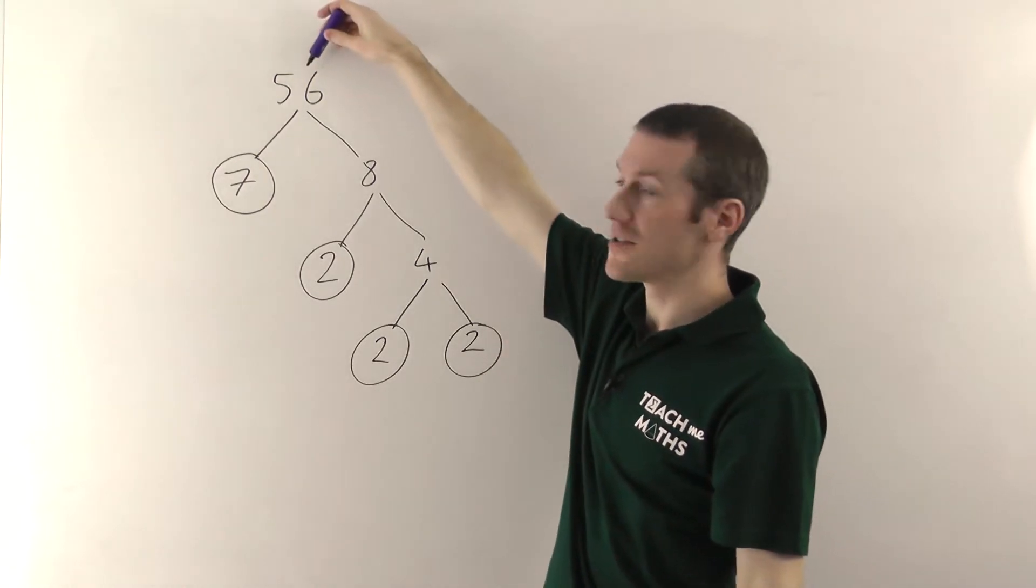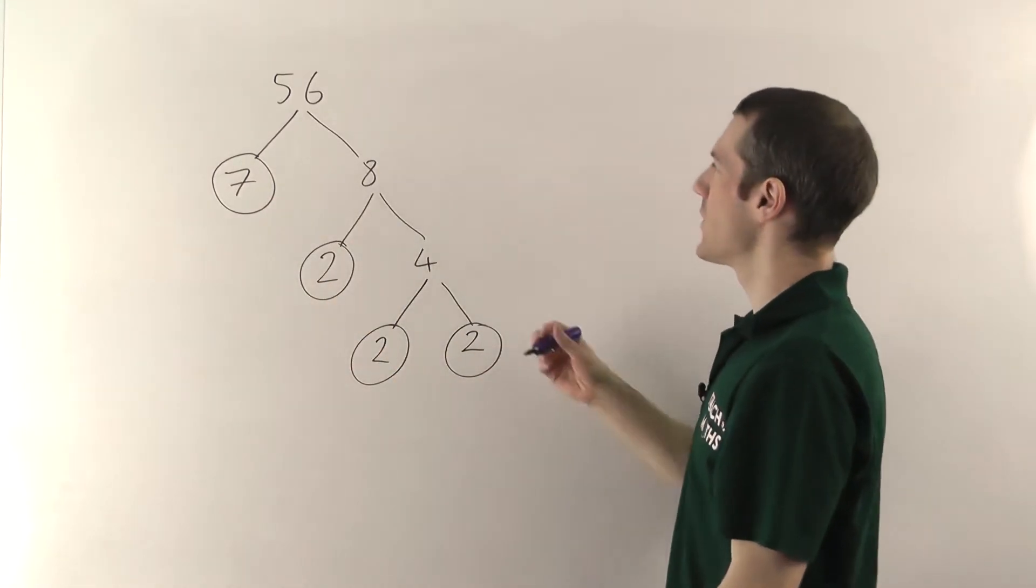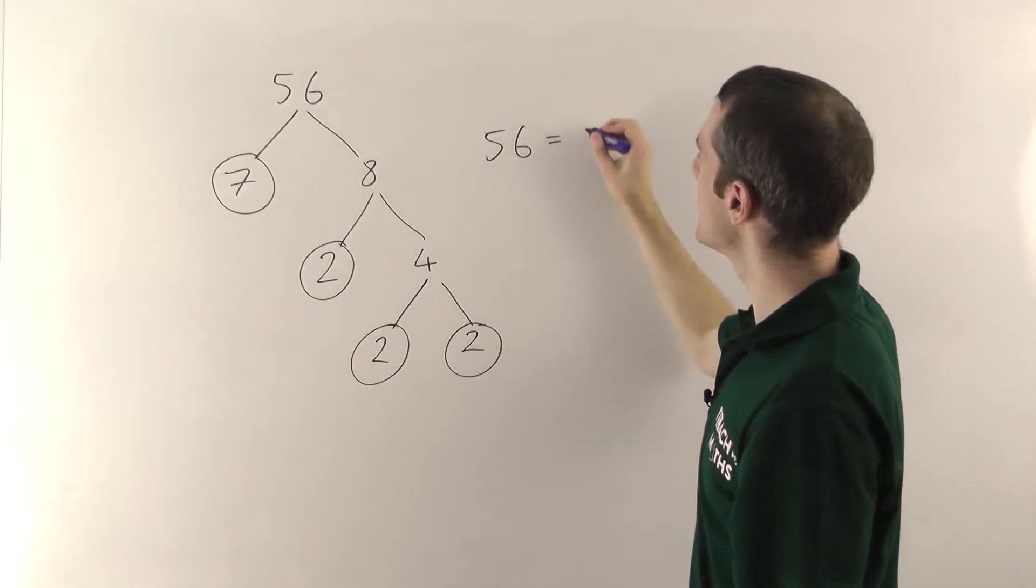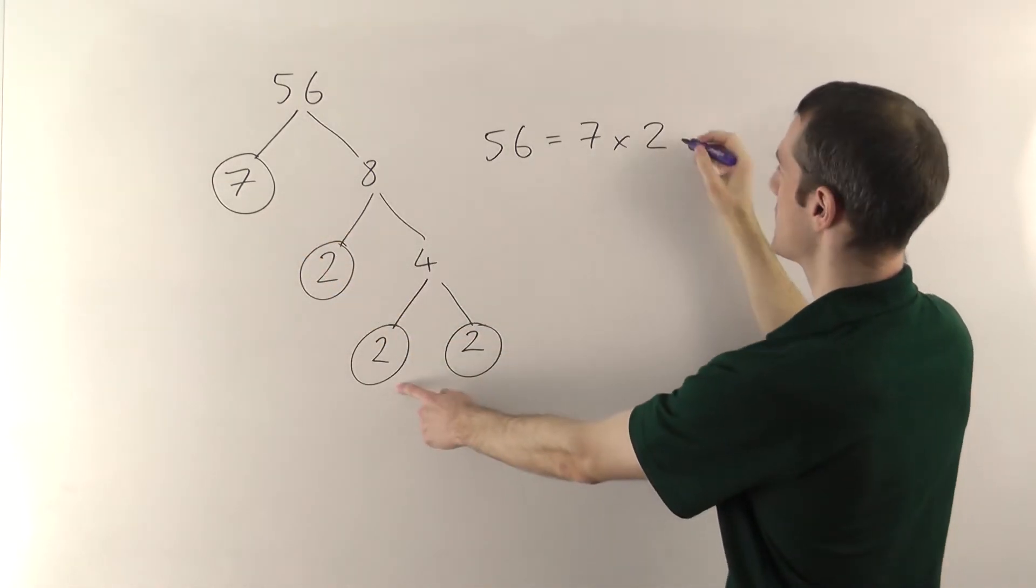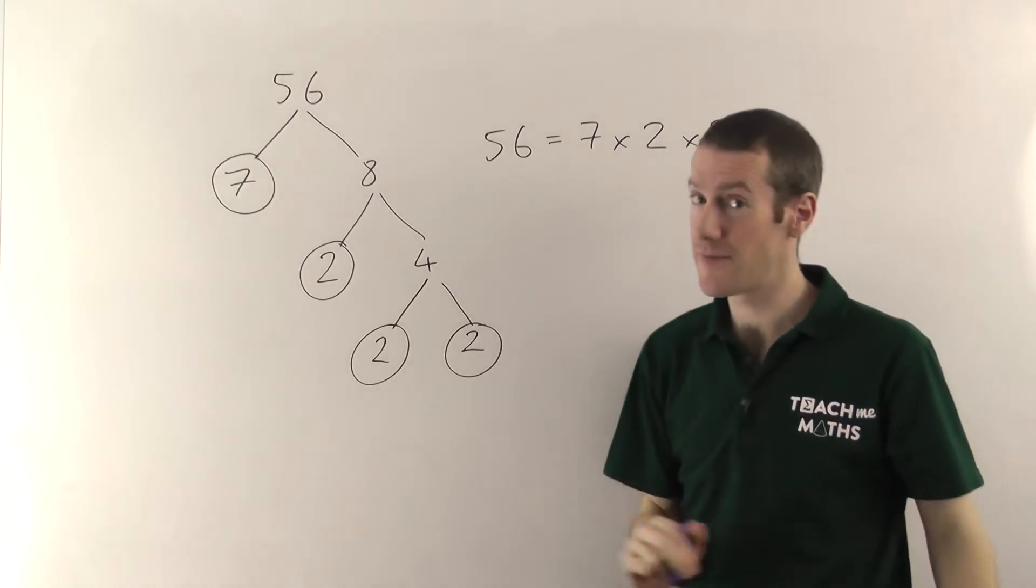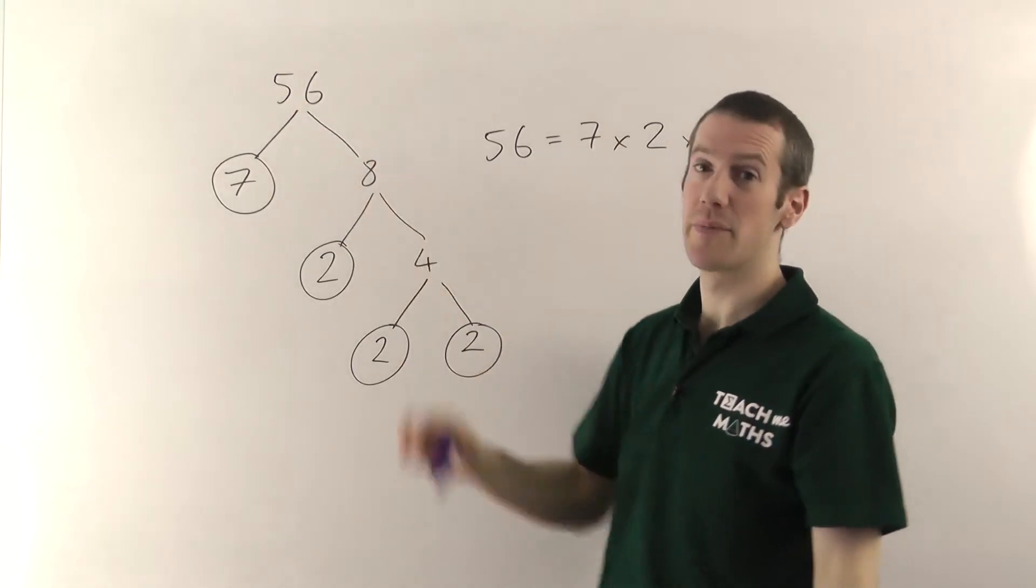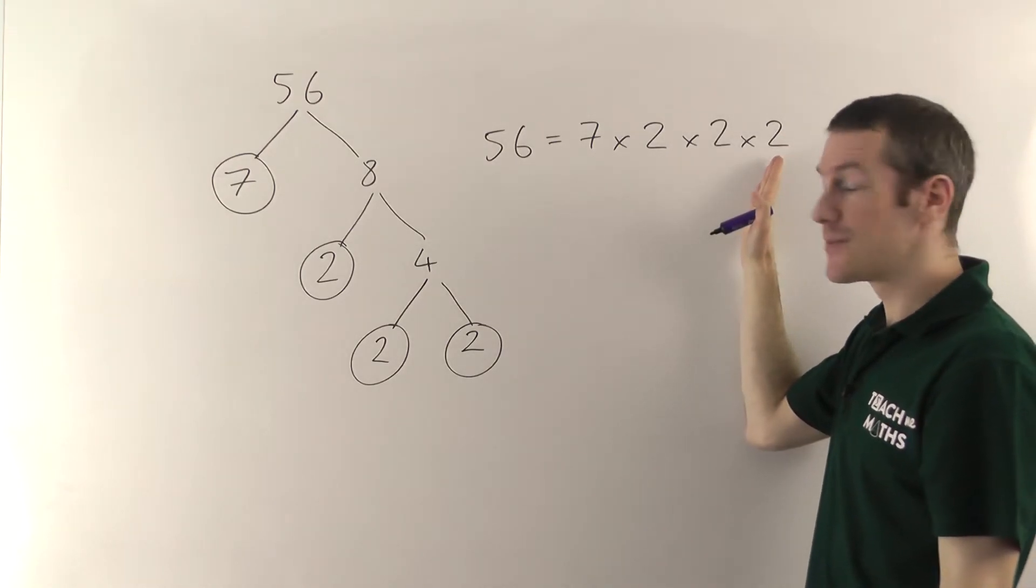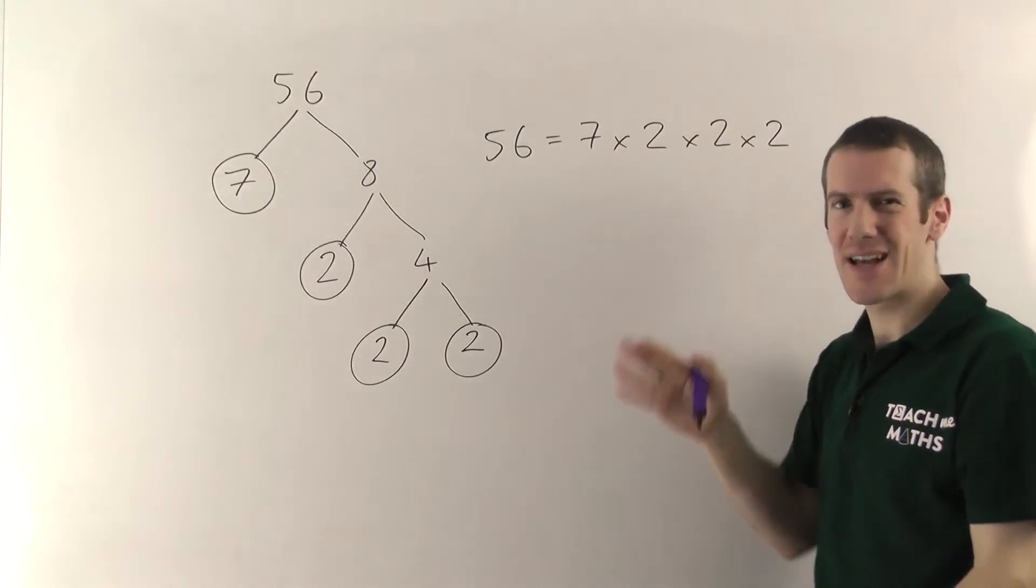So the prime factors we say of 56 will be 7, 2, 2 and 2. What that means is if you start off with 56, you can rewrite that as 7 times 2, times another 2, times another 2. If you multiply all those things together you should get 56. Because essentially these are all the things that make up all the bits of 56. We've decomposed, we've broken it up, 56, into these smaller factors. They're all factors because they divide into 56. And they're all prime numbers. So that's what you're asked to do.